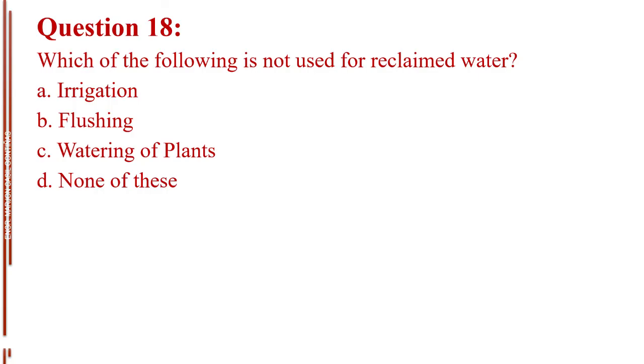Question number 18. Which of the following is not used for reclaimed water? Letter A, irrigation. Letter B, flushing. Letter C, watering of plants. Letter D, none of these. The answer is Letter D, none of these because all of these are used for reclaimed water.